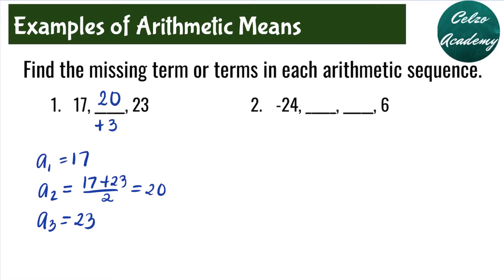If you're missing two terms or more, I suggest that you use the arithmetic sequence formula a sub n equals a sub 1 plus n minus 1 times d to find the common difference. For question number two, we have four terms in total: a sub 1 is negative 24, a sub 2 and a sub 3 are missing, and a sub 4 is 6.